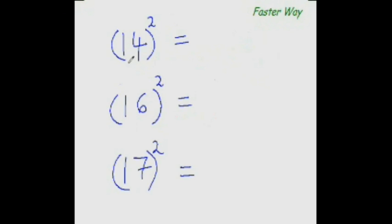Now you find out the square of all these numbers. So 14 square would be add this 4 to 14. 14 plus 4 is 18 and 4 square is 16. So 18 plus 1 is 19. So 196.